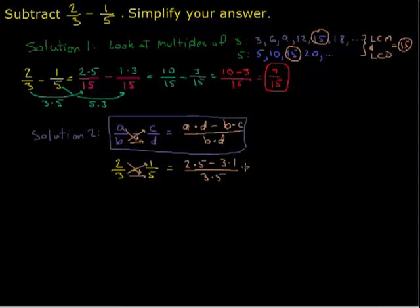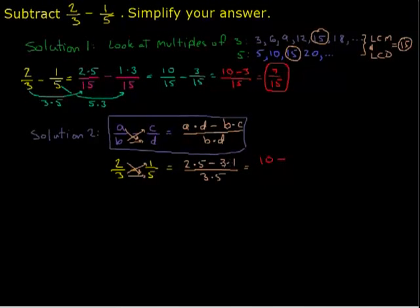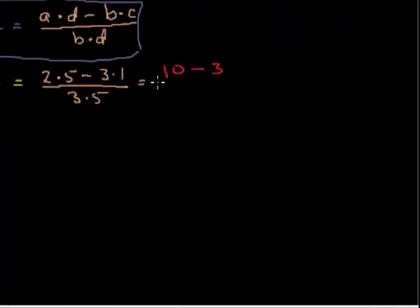And so that leaves us with 2 times 5 is 10, minus 3 times 1 is 3, divided by 3 times 5 is 15. So now we just subtract. 10 minus 3 is 7 over 15, and we have a match. Our two answers actually match here.